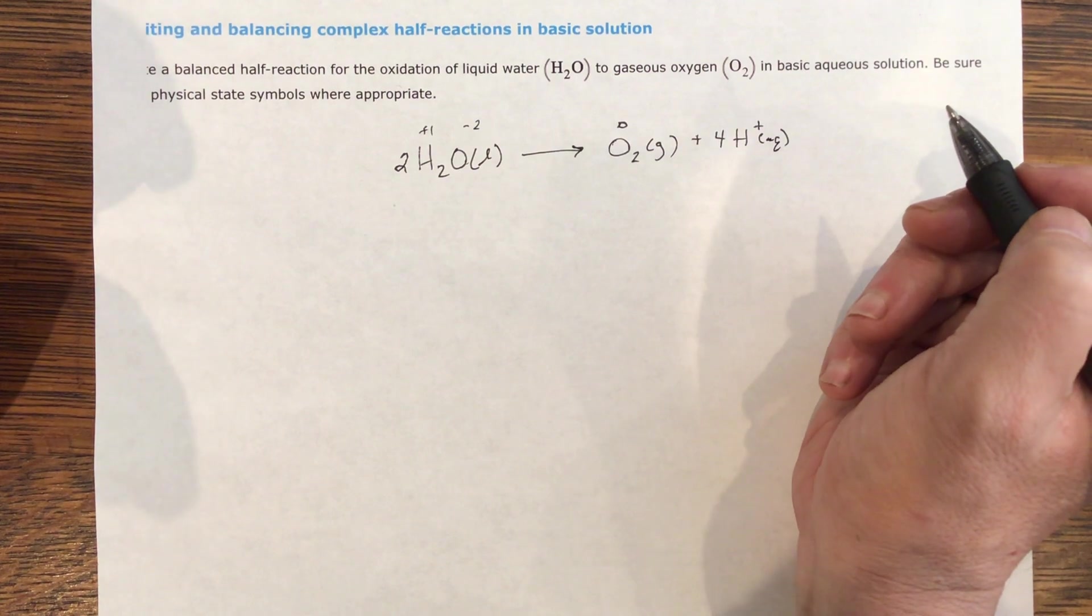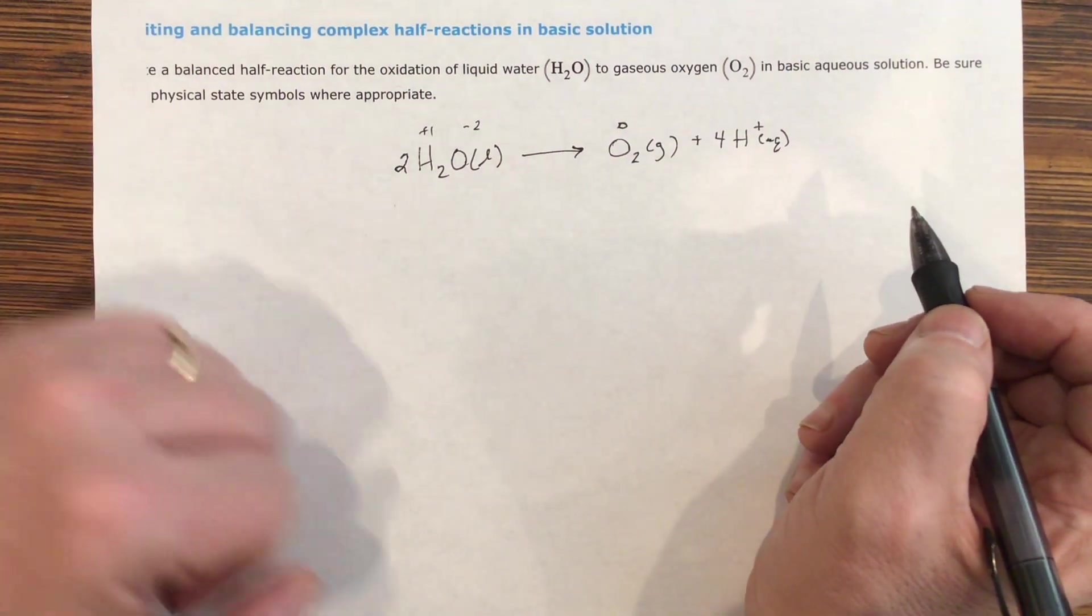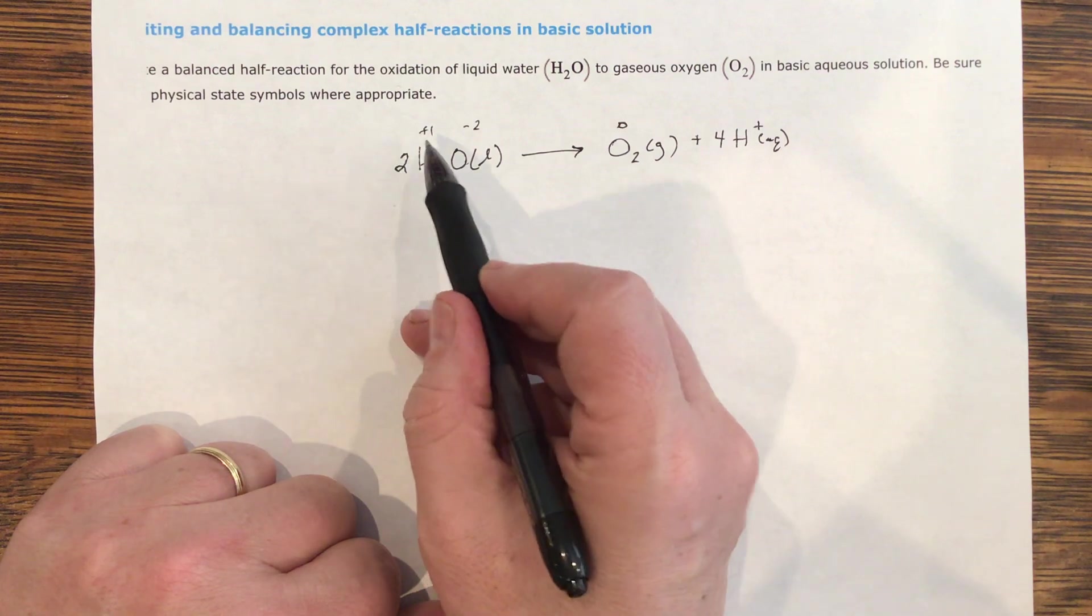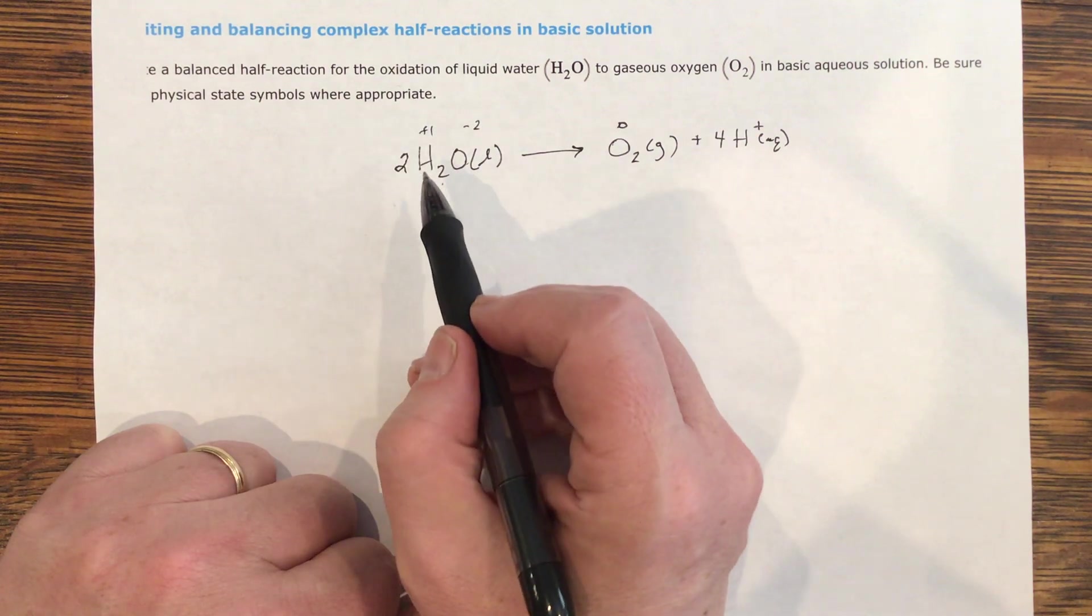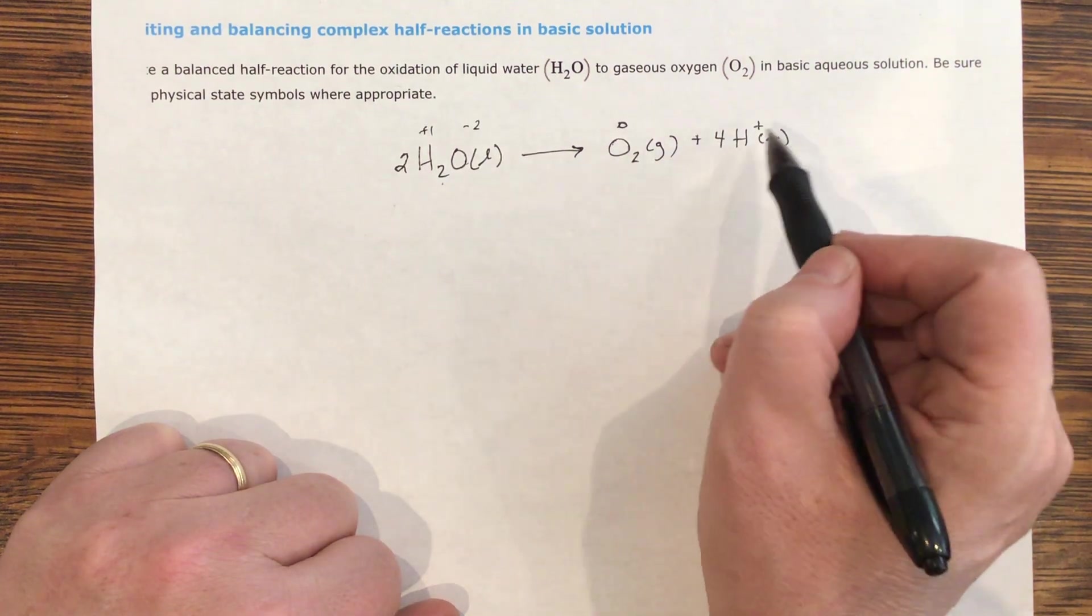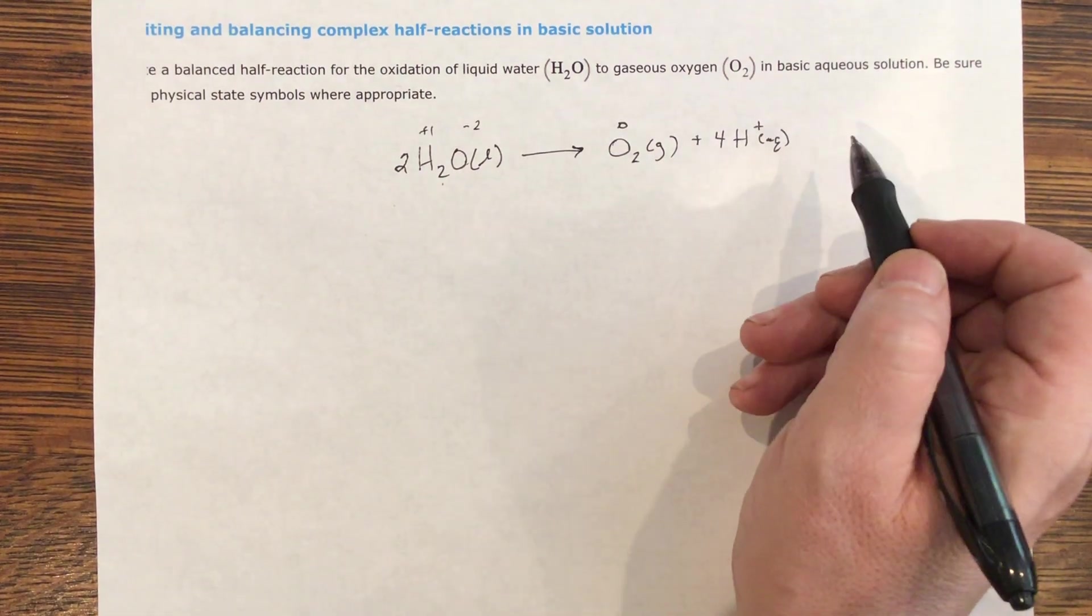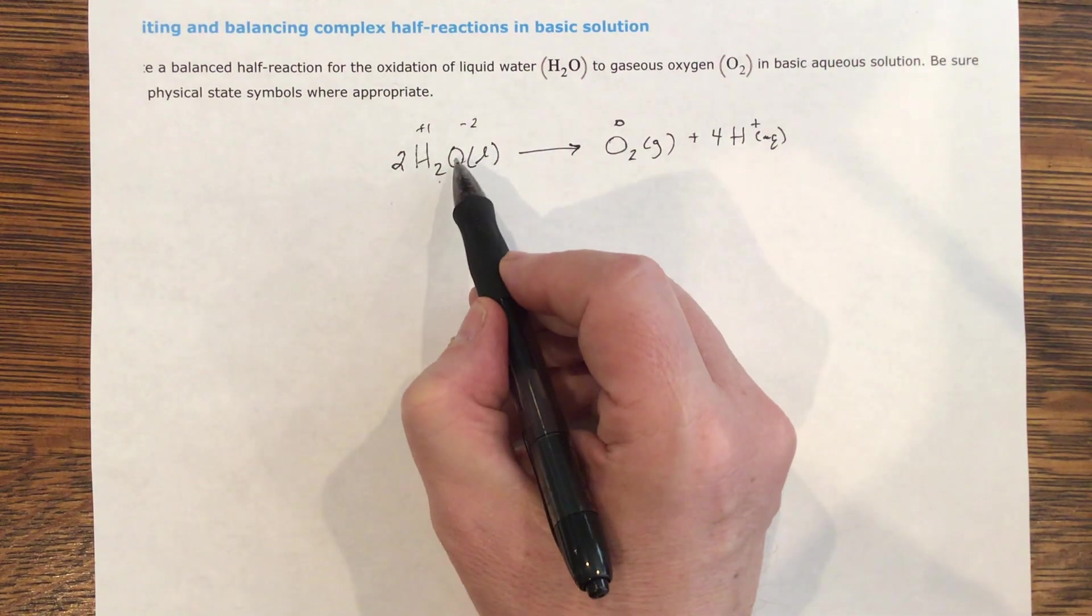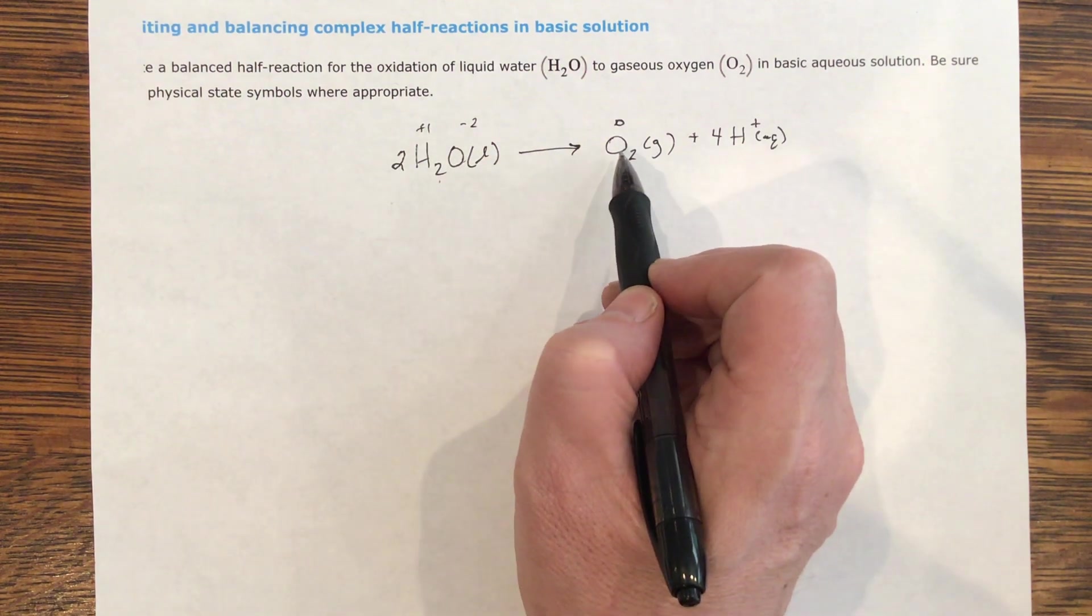The very last thing in a redox reaction is that not just the elements have to be balanced, but the charges have to be balanced. On this side, we've got four plus ones and one negative two. So that's four minus two, so there is plus two on this side. And on this side, I've got four pluses. So I need to say, what has happened? Where have my electrons gone? So it's here to here where the electrons have changed from O as negative two to O as zero.